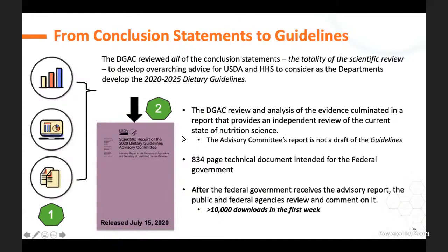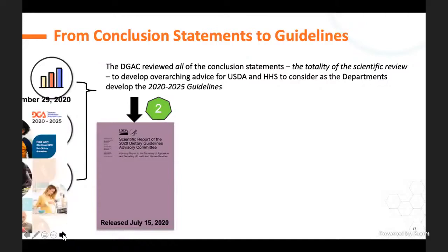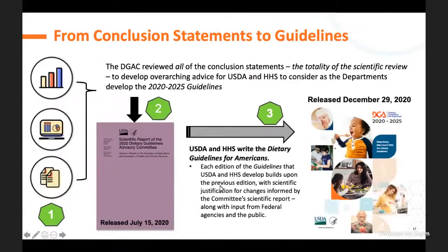We reviewed the evidence and wrote an 834-page, very technical report intended for the government. It was highly accessed—over 10,000 downloads in the first week. The government then wrote the actual guidelines, taking what was in our report as well as other input including previous editions and public input, and released the final guidelines in December.